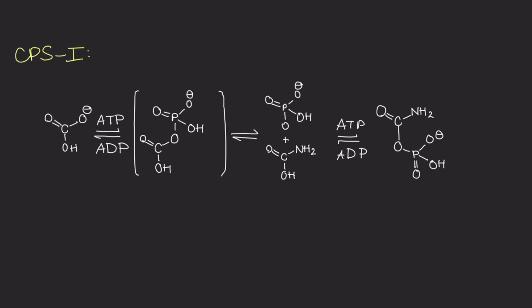CPS1 represents an important regulatory enzyme of the urea cycle that mediates the ATP-driven reaction by gaining ammonium, carbonate, and phosphate to form carbamoyl phosphate, hence the name. However, let's talk about the reaction.